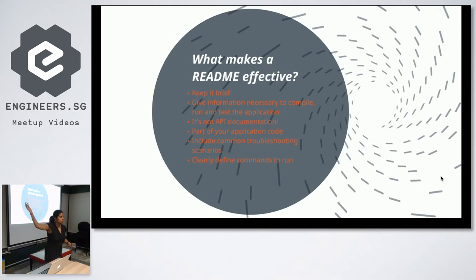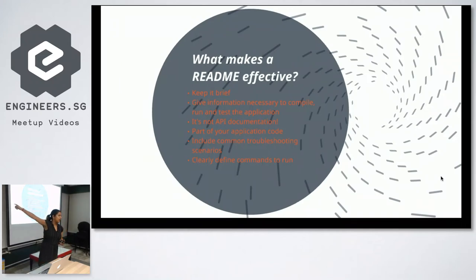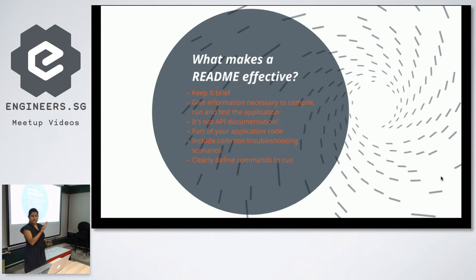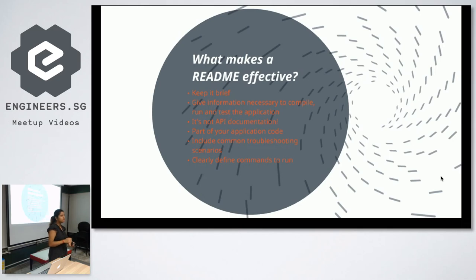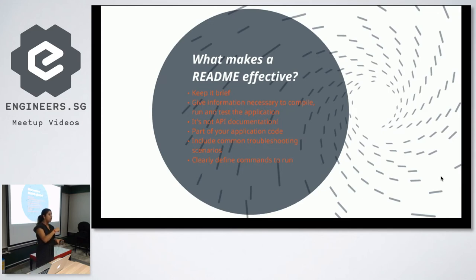It's very important that the README is part of your application code. I'm assuming everyone uses some form of version control — hopefully Git. Your README needs to be checked in as part of your application code, because the intent is to help developers get onboarded as smoothly and easily as possible. If it's somewhere in Confluence or Google Drive, there's still that manual process of someone having to tell you where to find it.